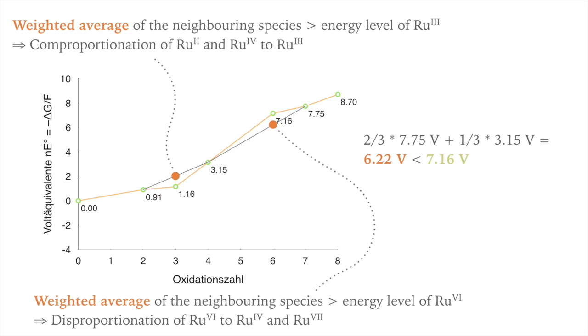We don't actually know whether or not the disproportionation takes place and to what extent. The Frost diagram shows only thermodynamic relationships. It might be that a disproportionation is kinetically not possible because there is a too high activation energy needed for this process to take place.